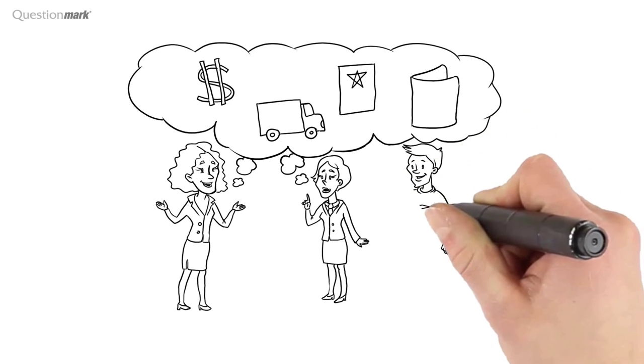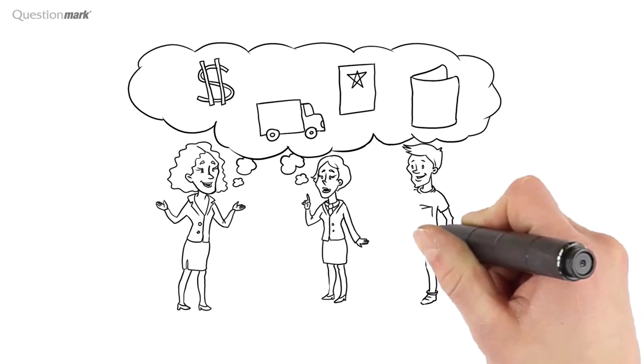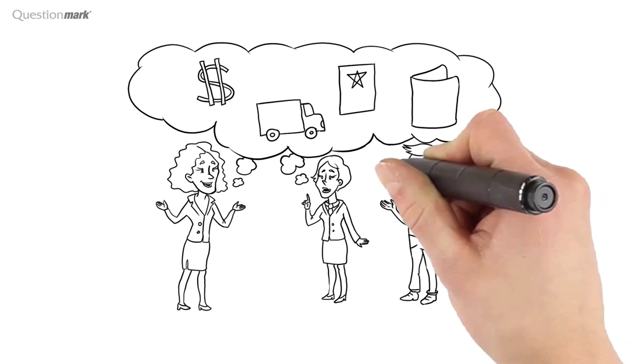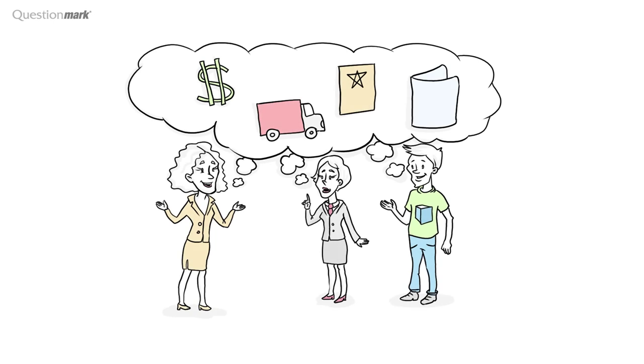Liz explains that they will need to write questions that align with the four topics: regulations, pricing, delivery, and warranties. She explains that this topic structure will enable the assessment to provide customer service agents and management with diagnostic feedback on where the team's strengths and weaknesses lie.